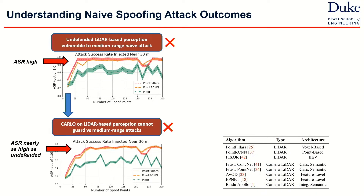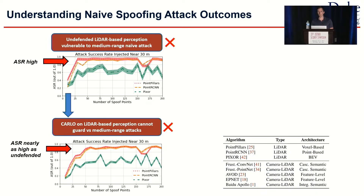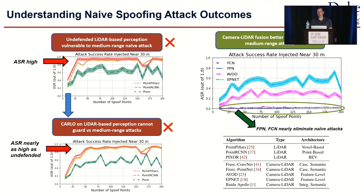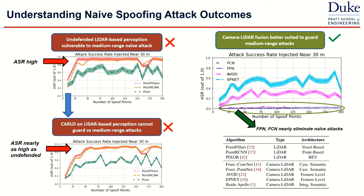One of the contributions of our work was to study, for the first time through extensive evaluations, sensor fusion as a possible defense against naive attacks. What we found is that in general, camera-LiDAR fusion is better suited, especially at medium ranges, at guarding against these types of attacks. Even the worst-performing fusion algorithm is on par or better than the CARLO defense at medium range. In fact, for PointNet and ConvNet, two of our perception algorithms, naive attacks are almost completely eliminated. So that's a key benefit of using sensor fusion to guard LiDAR-based perception against spoofing attacks.